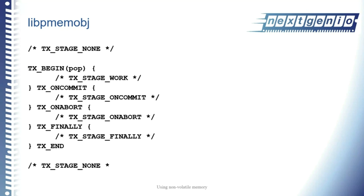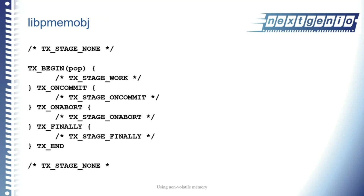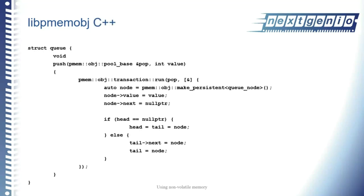If your functionality requirements are more rich and varied than a traditional key-value store supports, libpmemobj provides the tools to write that kind of code. There are also language bindings for multiple languages — the macros work in C and potentially others, but there are also direct C++ interfaces that provide equivalent push, pop, and transactional functionality within the object store.